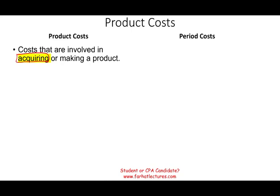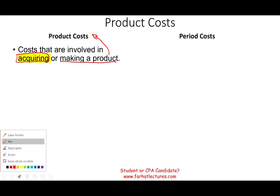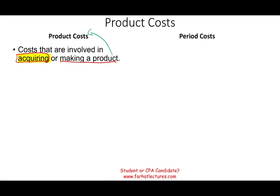Let's assume you are manufacturing a vehicle. You have to keep track of making the product. Any cost involved in making that vehicle is considered a product cost.